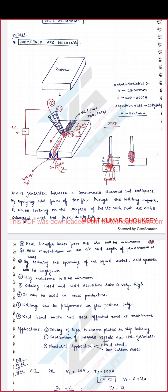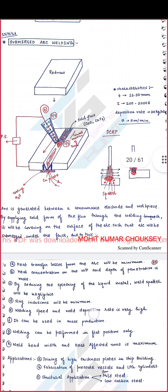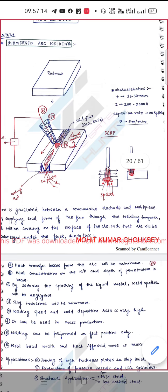In Submerged Arc Welding, the flux is supplied in solid form through the torch. In this flux, calcium oxide (CaO) is provided as a key constituent.